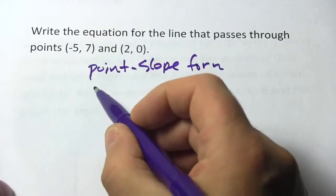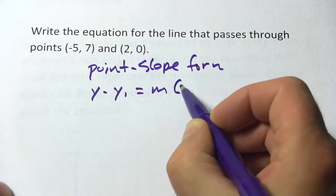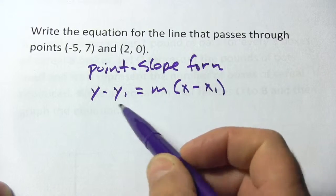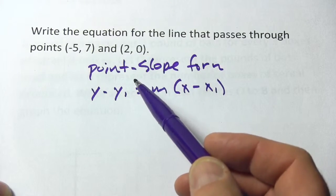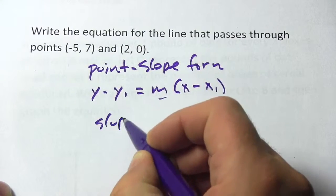And just as a reminder, that is y minus y1 equals m times x minus x1. So what we need for x1 and y1 is just one of these points, doesn't matter which one. And then we also need the slope for m. So I think I'm going to calculate the slope first.